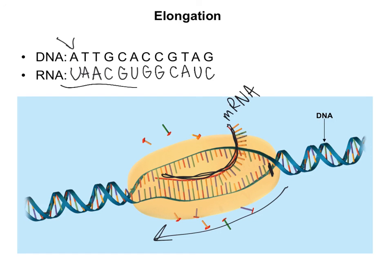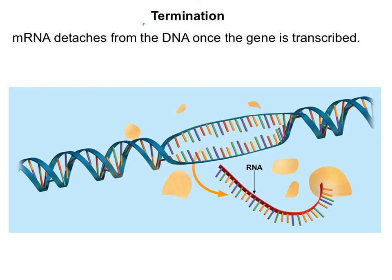That ribosome will read these instructions and assemble a protein. That brings us to our third step, which is termination — the end of this process essentially. That mRNA transcript will leave the nucleus once it's transcribed. Our RNA polymerase detaches and the DNA will wind back up again like nothing ever happened. The next step of this process is translation, and we'll talk about that next. Just know that all of this happens in the nucleus, and our next step of translation will occur out in the cytoplasm and at ribosomes.